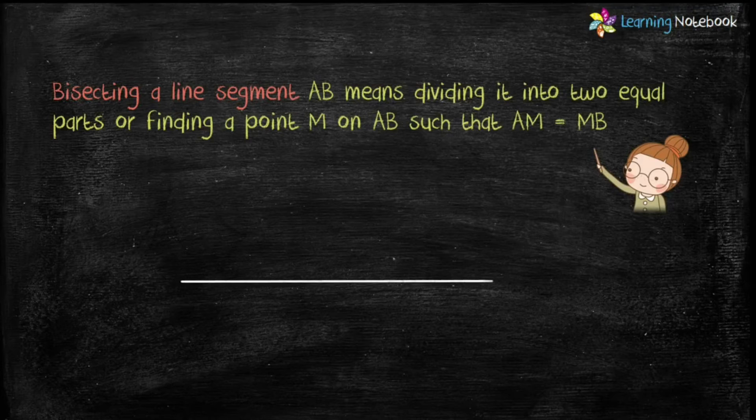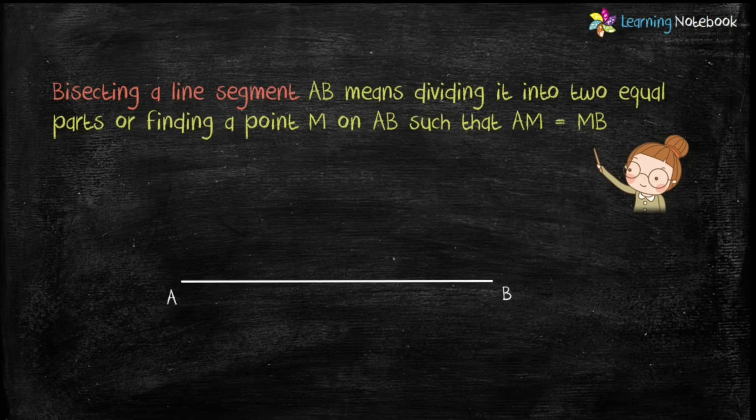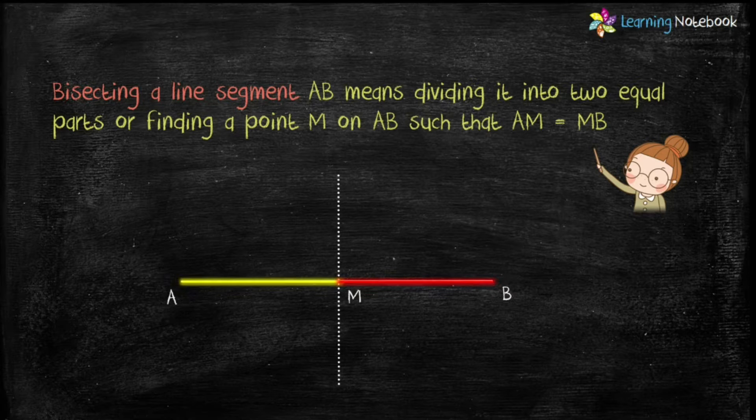Students, here we have a line segment AB. Bisecting this line segment AB means dividing it into two equal parts or finding a point M on AB such that AM equals MB.